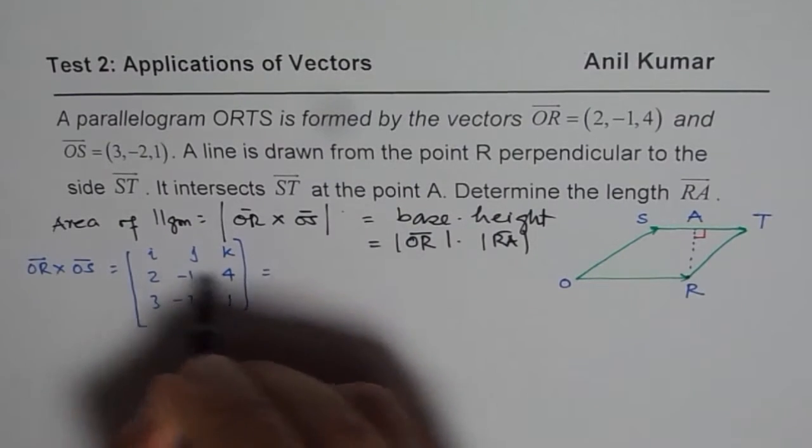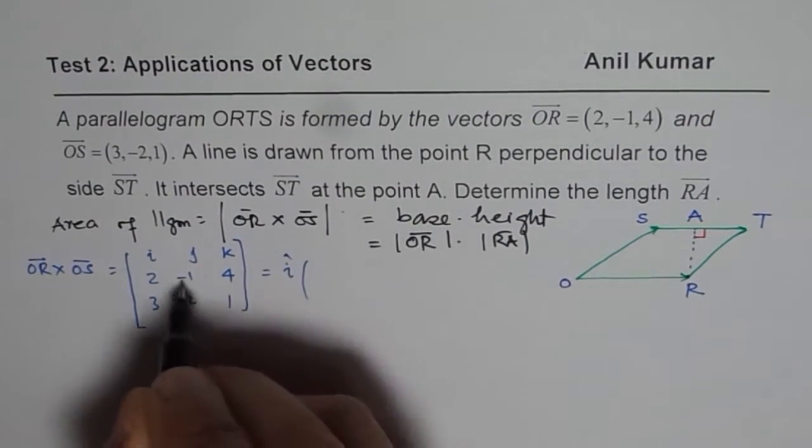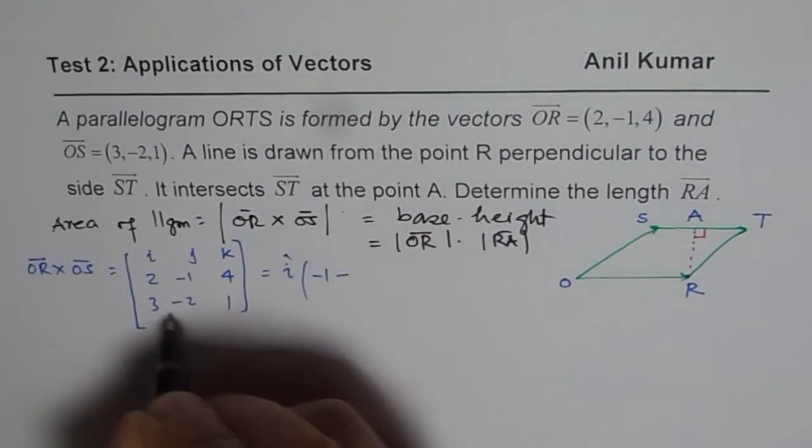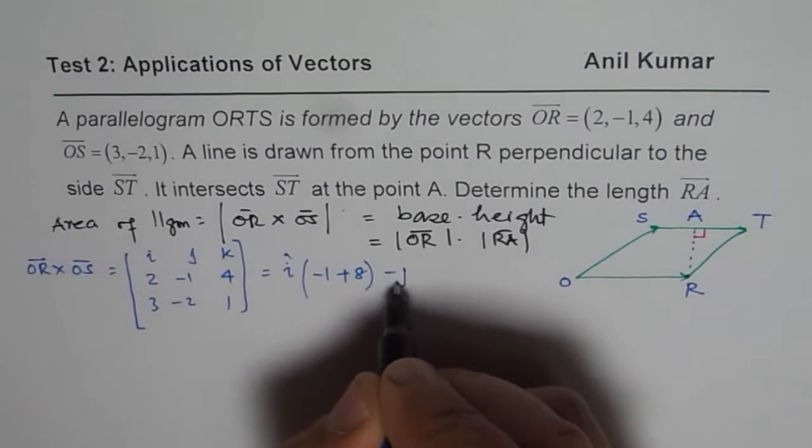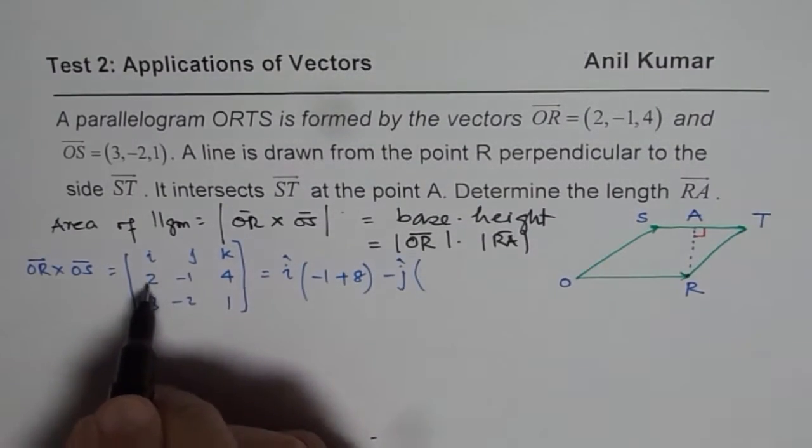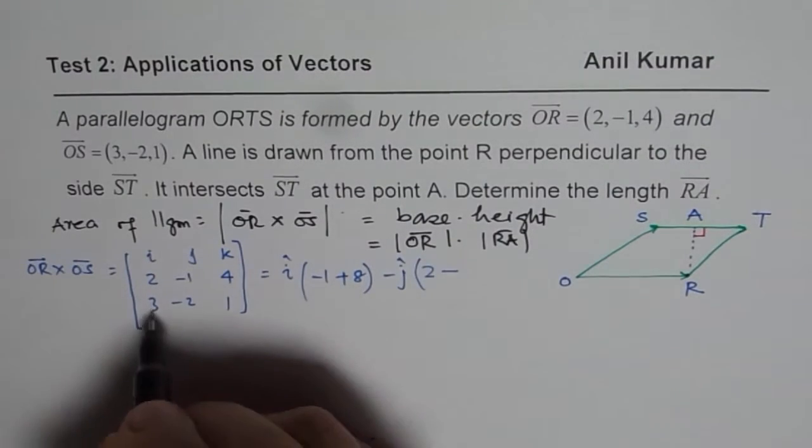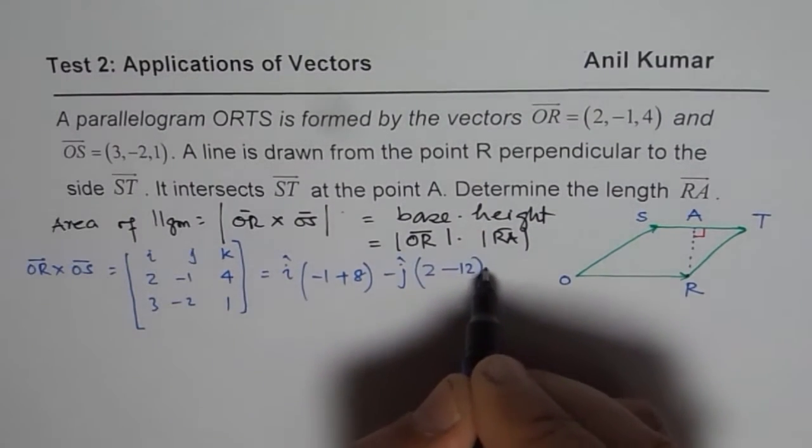So that gives us, as i component will be, -1 minus of this which is +8, minus j, which is 2 times 1 as 2, minus 3 times 4 as 12, plus k.